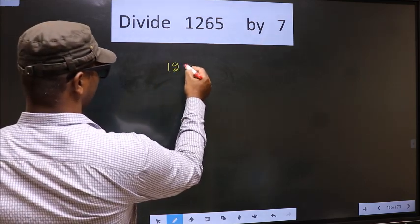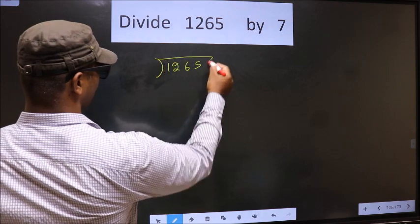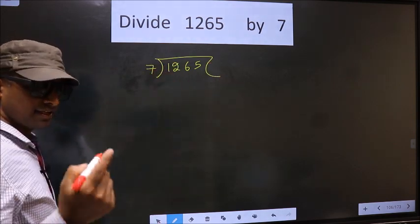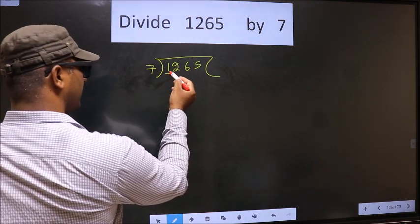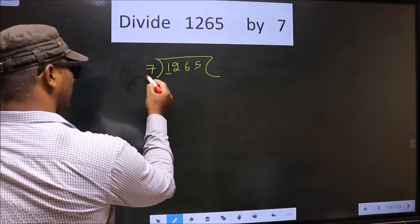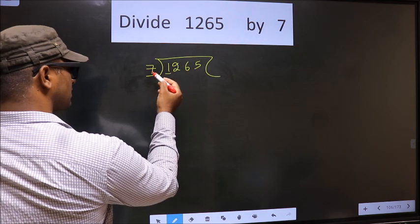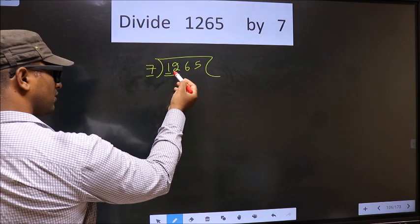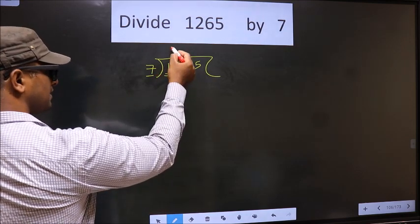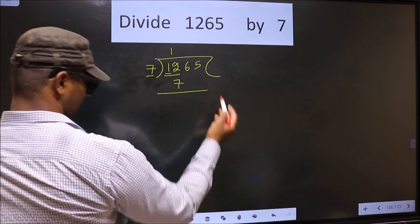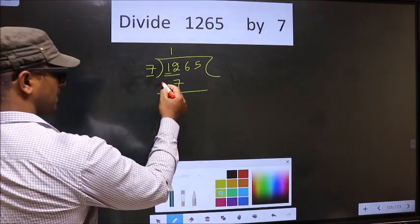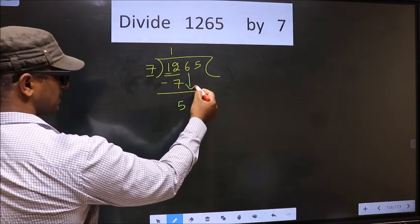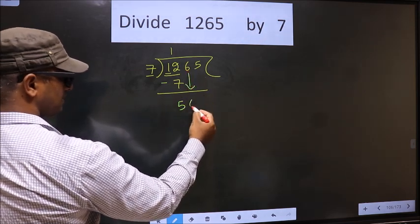That is 1265. 7 here. Now here we have 1. Here 7. 1 is smaller than 7, so we take 2 numbers, that is 12. A number close to 12 in the 7 table is 1 times 7, which is 7. Now you subtract. 12 minus 7 is 5. Now you will bring down the beside number.